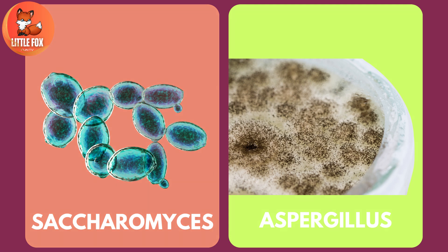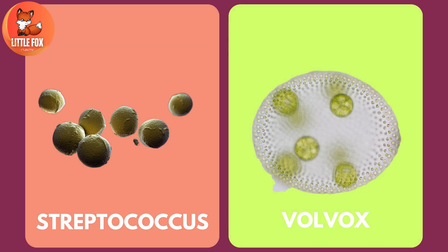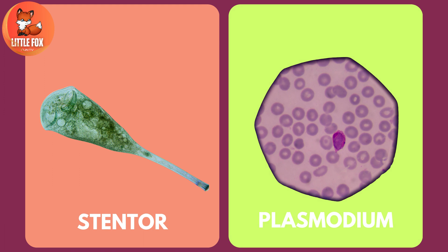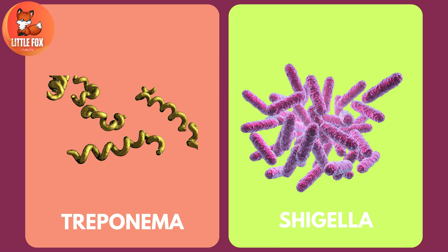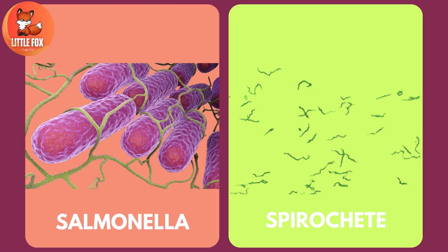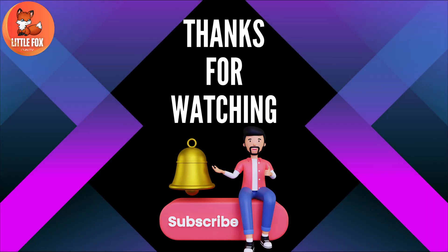Number twenty-one: streptococcus. Number twenty-two: volvox. Number twenty-three: stentor. Number twenty-four: plasmodium. Number twenty-five: treponema. Number twenty-six: shigella. Number twenty-seven: salmonella. Number twenty-eight: spirochete. Thanks for watching — please press the bell icon to subscribe to my channel.